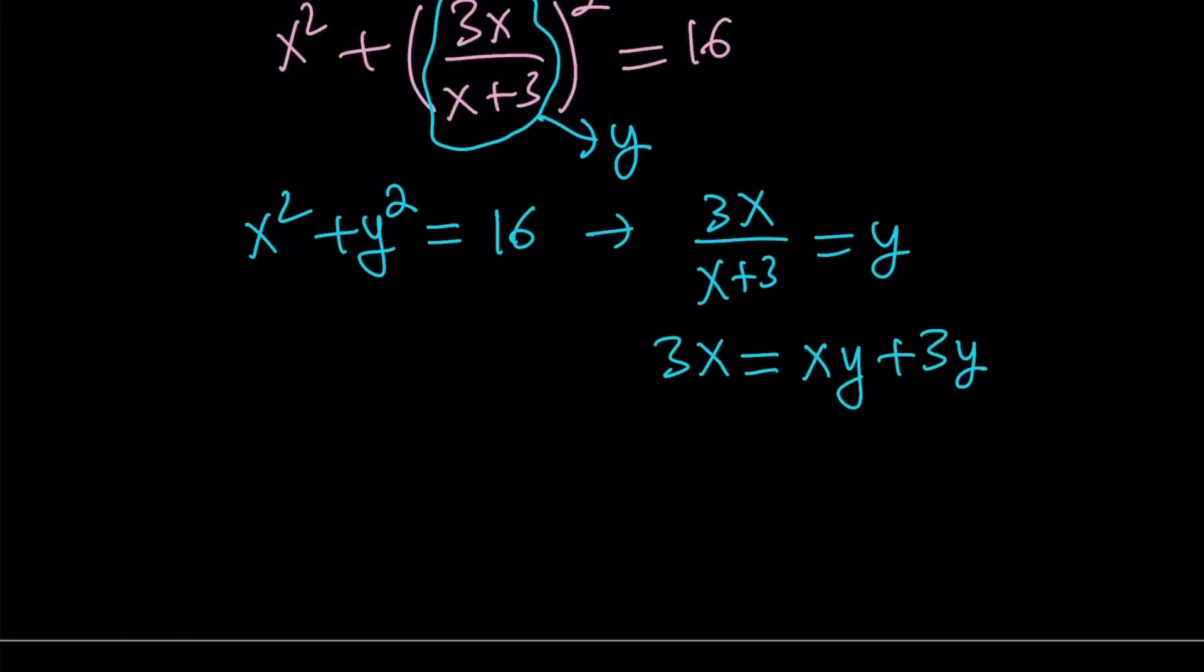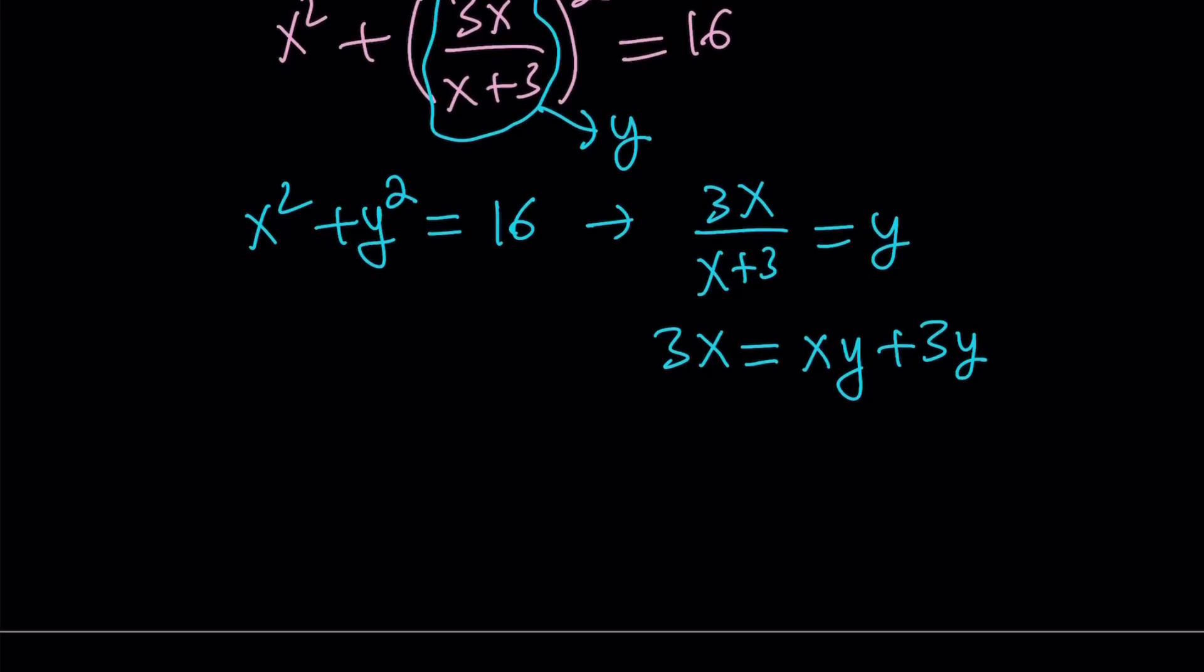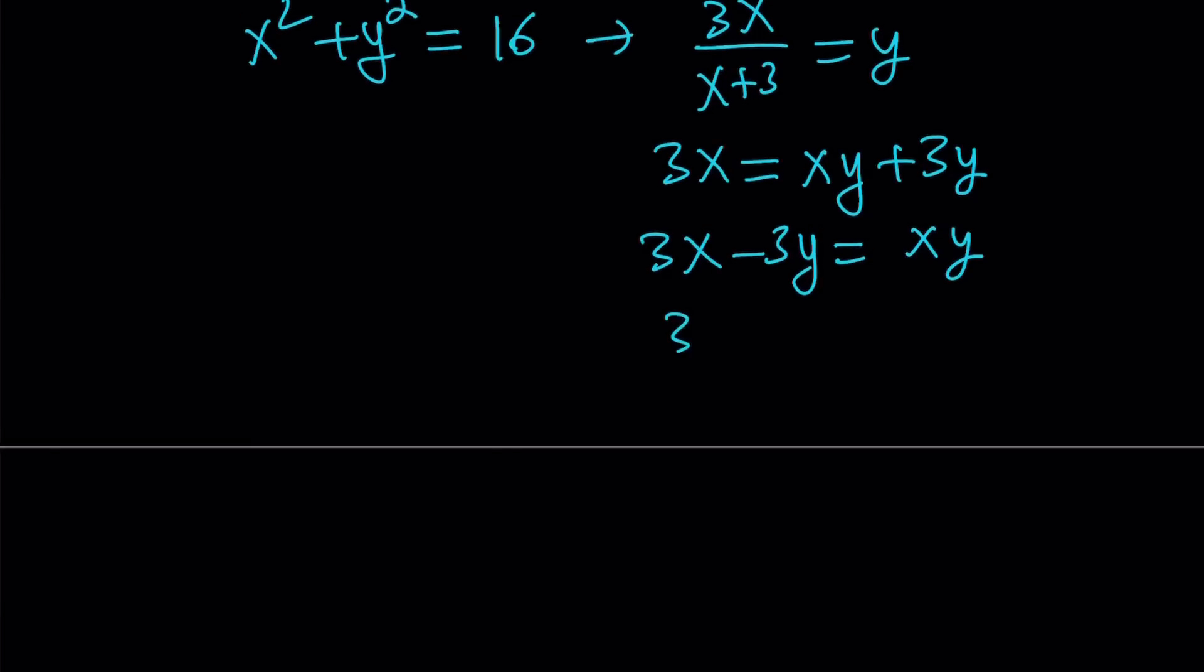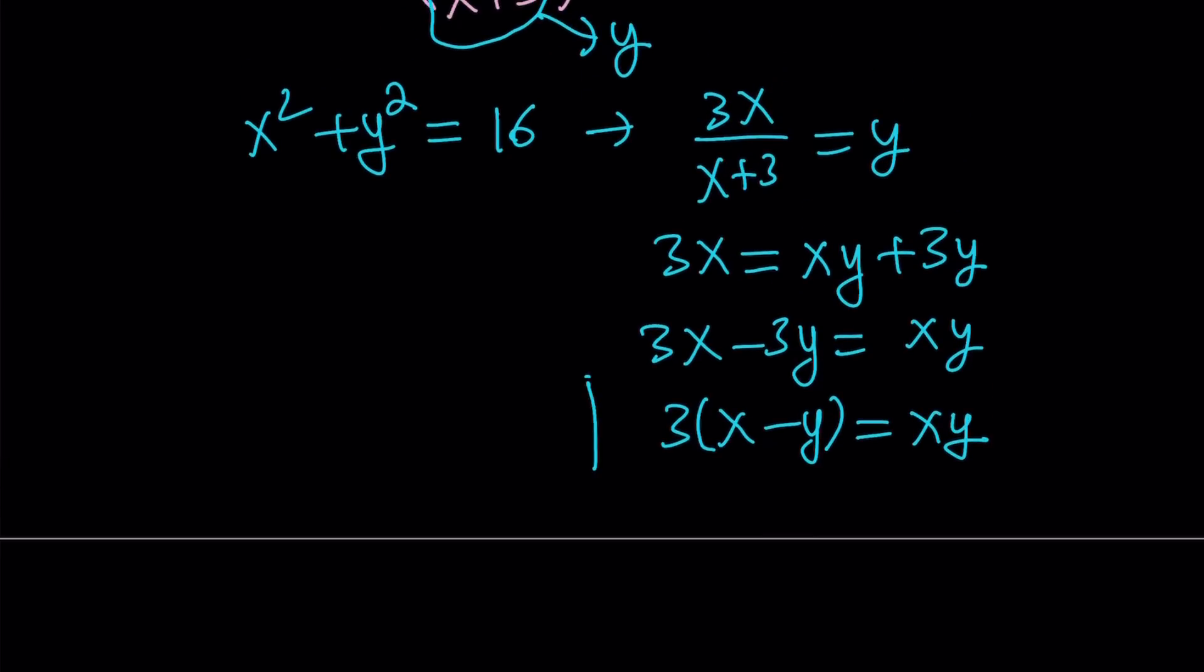And I kind of want to get a symmetrical expression here, or maybe at least use some identities. Let's subtract 3y from both sides. And then take out the 3. Now, notice that the second equation gives me xy and x minus y. The first equation gives me sum of two squares. So we can kind of manipulate these algebraically.